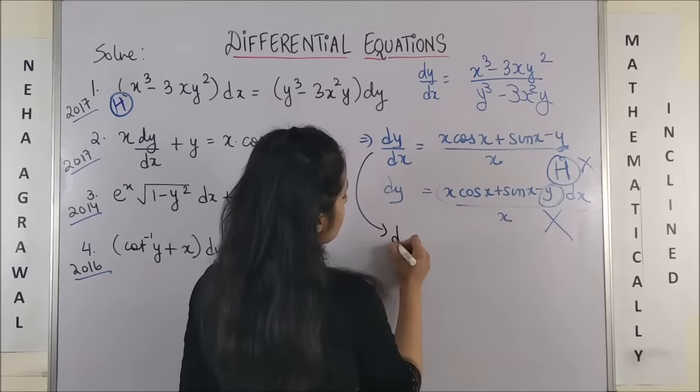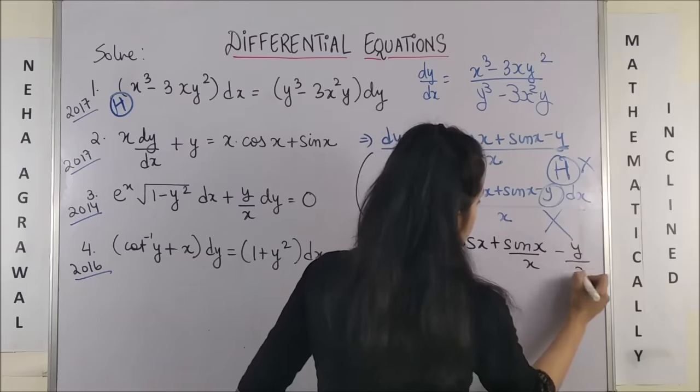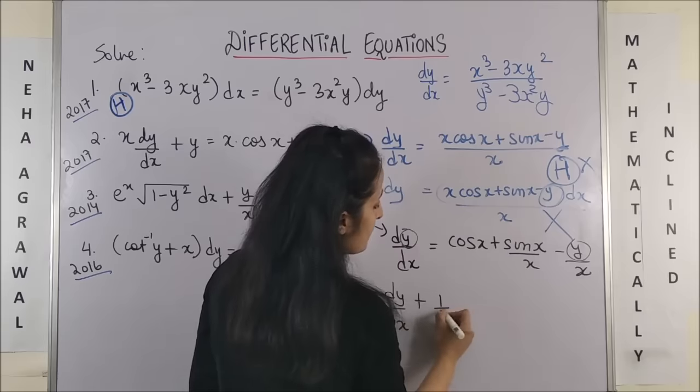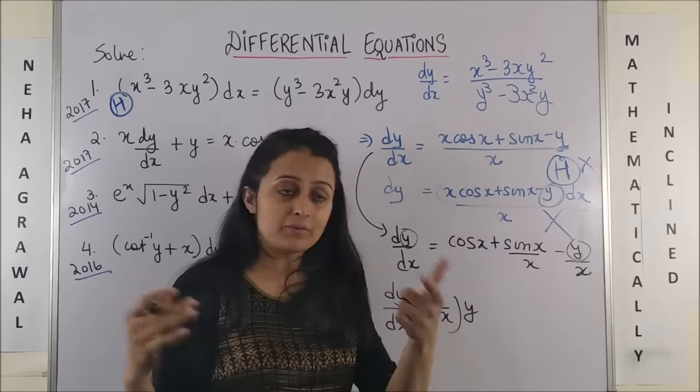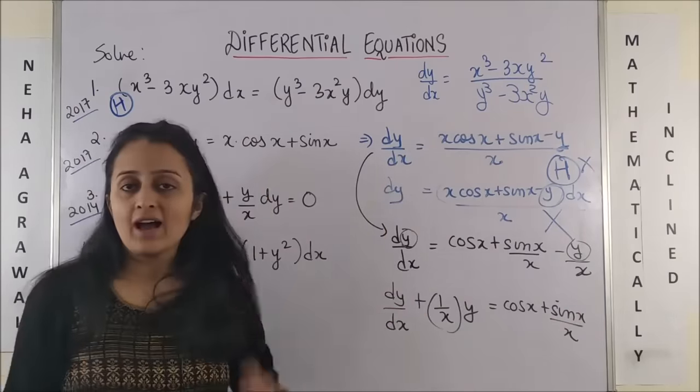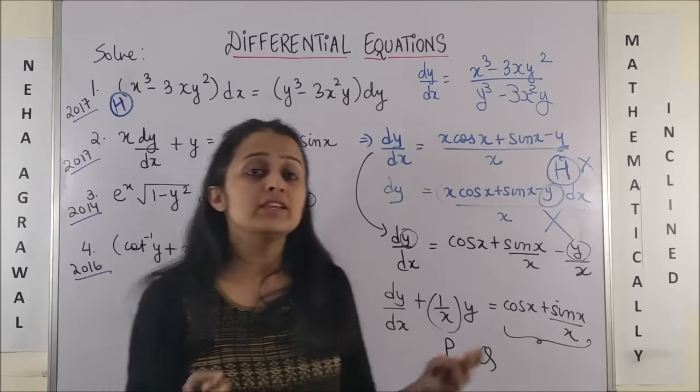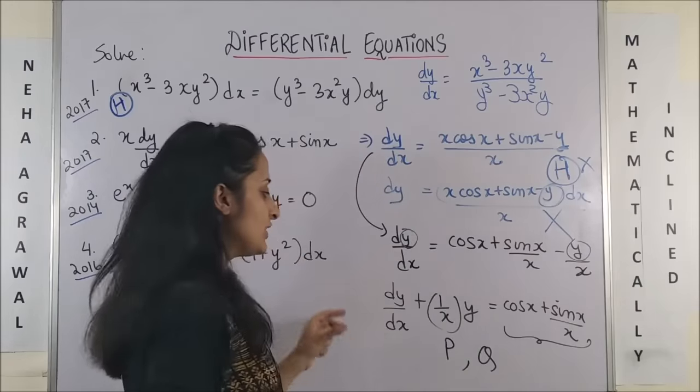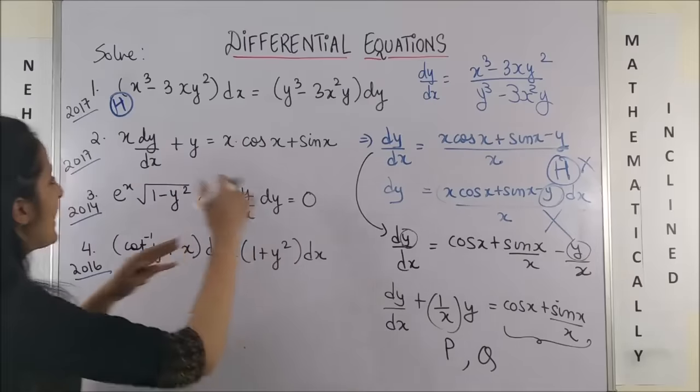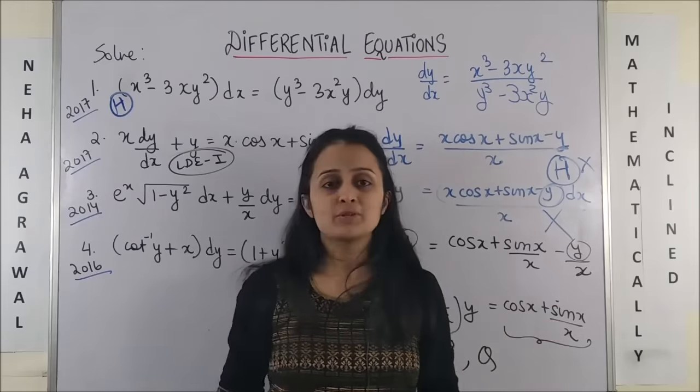That means I am left with the options of linear differential equations. Coming to the first one. If I say dy by dx is equal to cos x plus sin x by x minus y by x. We will try to bring it to the format. So, dy by dx plus 1 by x into y is equal to cos x plus sin x by x. Now, this is your linear differential equation, where this is p a function of x, this is q again a function of x. So, we find the integrating factor and proceed. We have identified this is linear differential equation type 1.